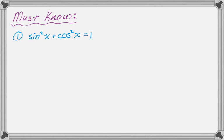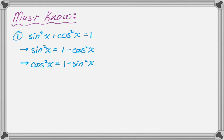The first thing you need to know is that sine squared plus cosine squared equals 1. We don't actually use it that way though — we rearrange it. If we see sine squared of something, we're often going to replace it with 1 minus cosine squared of that thing. If we see cosine squared of something, we replace it with 1 minus sine squared of that thing.